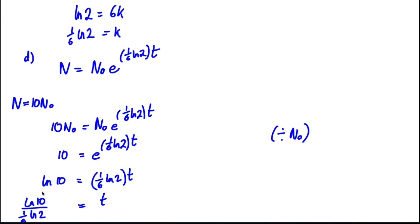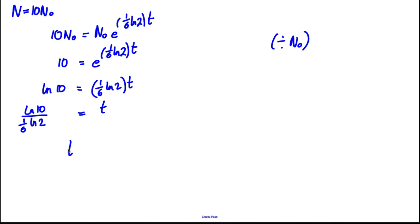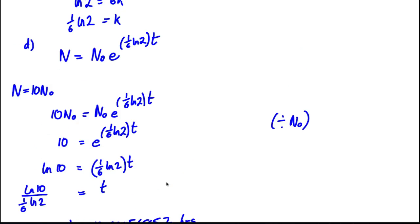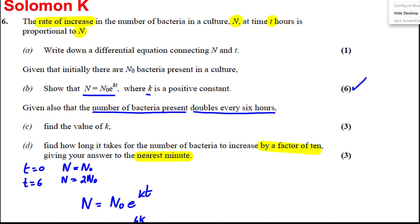We work out ln 10 divided by 1/6 ln 2. And we get our answer. Remember, T is in hours. We get that T is equal to 19.93156857 hours. And it asks us to the nearest minute. So this is clearly time is therefore equal to 19 hours and 0.93 of an hour. So I'm going to multiply 0.93156 by 60. And it says that to the nearest minute is 56 minutes. So time is 19 hours and 56 minutes. And there we are. We're done with this question. Thank you.